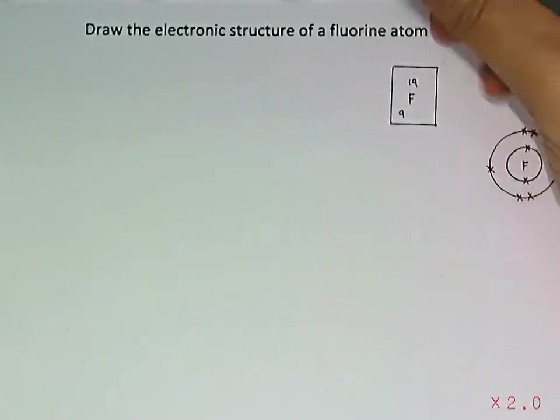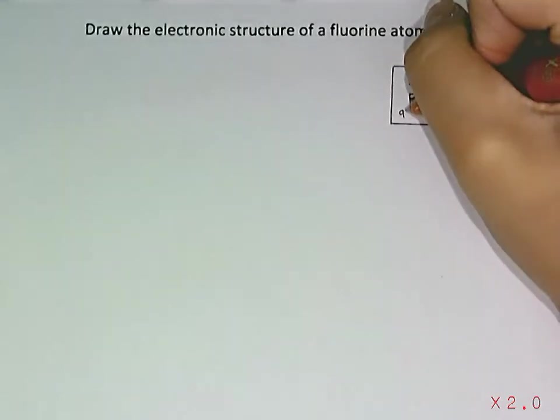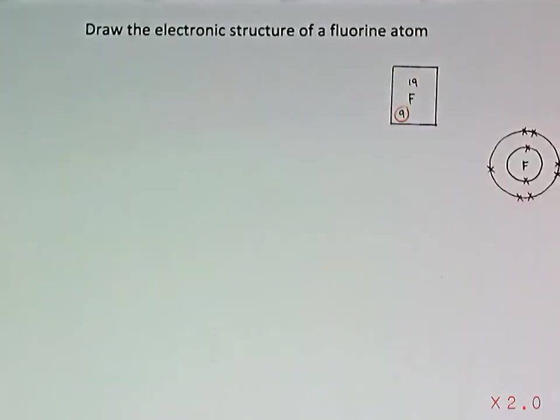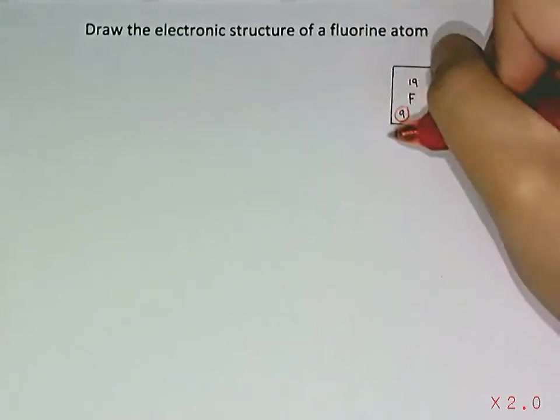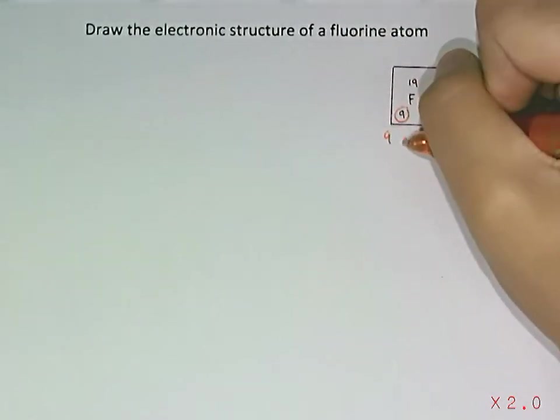The fluorine atom has a proton number of 9, which is equal to the number of electrons, which means that it has 9 electrons.